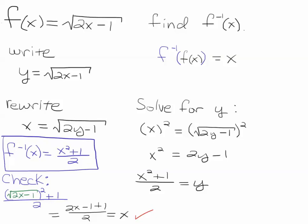And to check our work, we input the function f of x into the inverse function, and we see that we square the square root and we just get 2x minus 1. We add 1 to that, the ones cancel, then we divide by 2 and we end up with x.